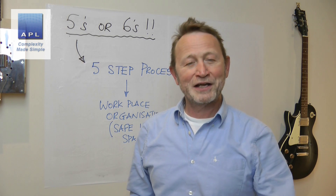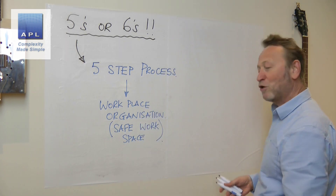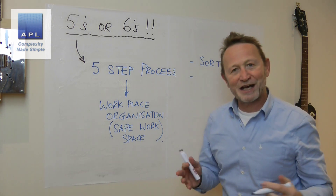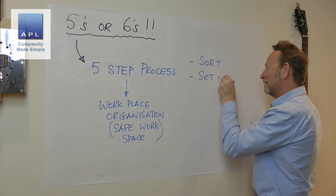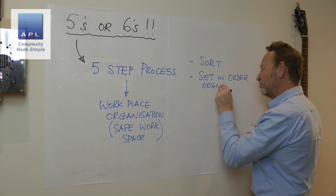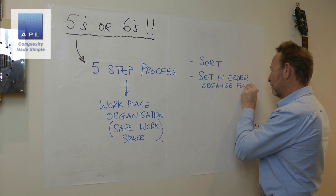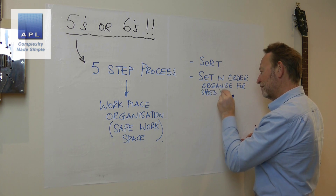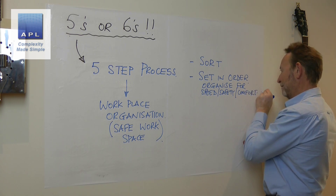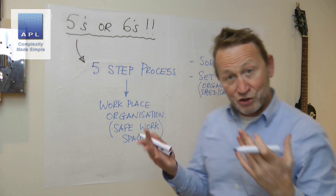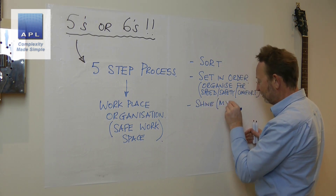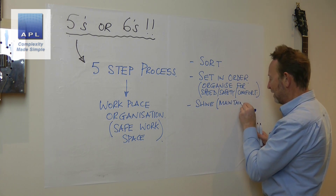If you think about this in the English language, each of these five words are verbs — they are doing words. So what does 5S want you to physically do? It wants you to sort — it's an action you've got to take. Then it wants you to set in order, in other words organize, for speed, safety, and comfort. That's what step two is about. Then it wants you to shine, but what it really means — and I prefer this phrase — is maintain those conditions.